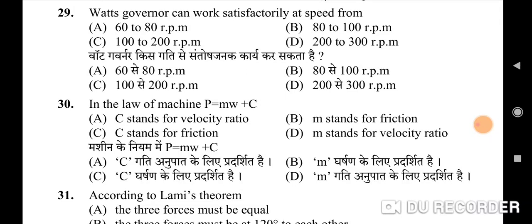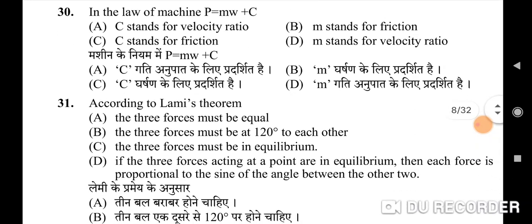Thirtieth question: in the law of machine P = mW + C — correct option is C: C stands for friction. Thirty-first question: according to Lami's theorem — correct option is D: if three forces acting at a point are in equilibrium, then each force is proportional to the sine of the angle between the other two.